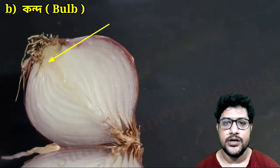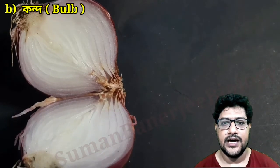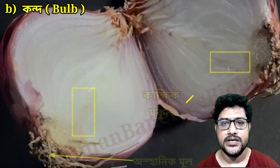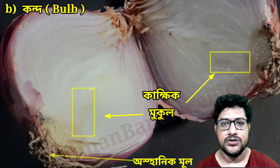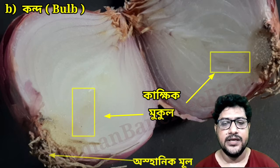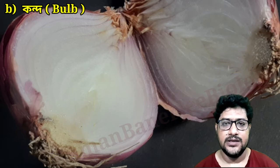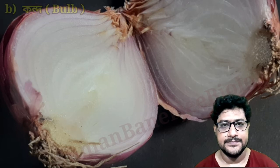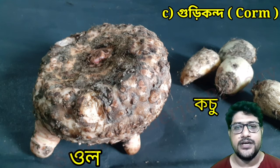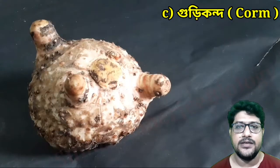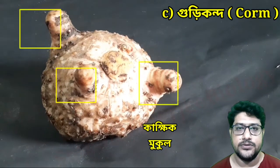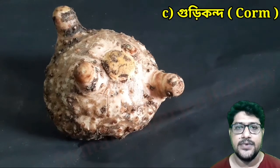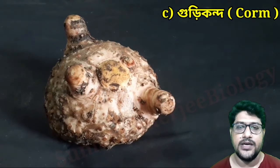এই চাক্তির মতো বেরিয়ে আসে যা আমরা দেখতে পাচ্ছি, এবং উপরের দিকে রসালো সবুজ পাতা নির্গত হচ্ছে। এই রসালো পাতা থেকে একটি গাছের গুড়ির মতো আমরা দেখতে পাচ্ছি — এই ক্ষেত্রে অনেক রকম অঙ্গজ জনন হয়।